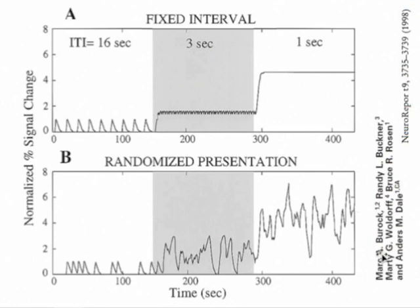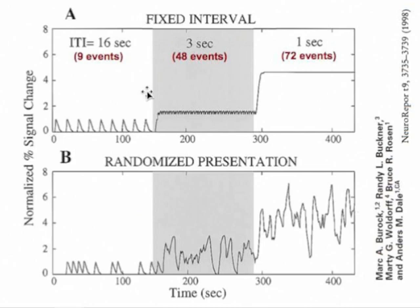In the fixed-interval condition of this experiment — a simulation, not actual fMRI data — they simulated a 144-second block of time during which there were nine discrete events. This is comparable to button presses spaced out by 20 seconds seen in the previous web clip; this time events are spaced out by 16 seconds. In the next 144-second time period they reduced the intertrial interval down to three seconds, so now there are 48 events crammed into the same 144-second period.